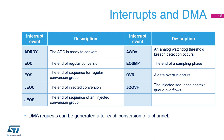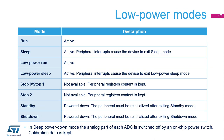DMA requests can be generated at each end of conversion when the ADC output data is ready. The ADCs are active in run, sleep, low power run, and low power sleep modes. In stop zero, stop one, or stop two mode, the ADCs are not available, but the contents of their registers are kept.